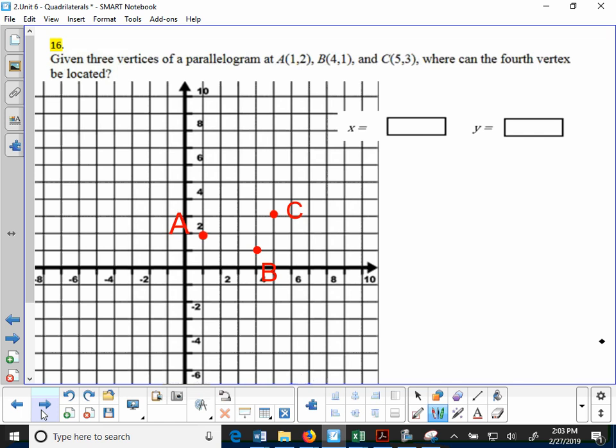We can put our fourth vertex somewhere over here between A and B, so that it would look like this. These are rough sketches, by the way, so bear with me. We could put it between C and B, so somewhere roughly over here. Or we can put it between A and C, so roughly somewhere over there.